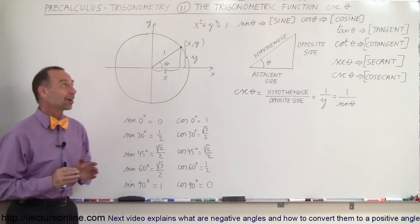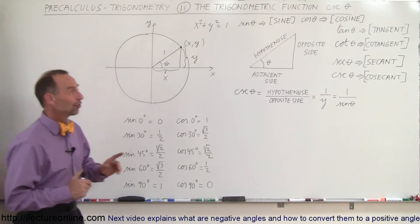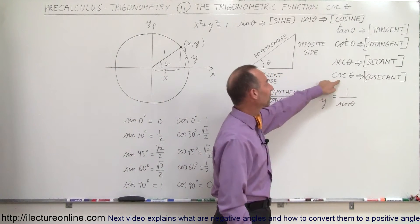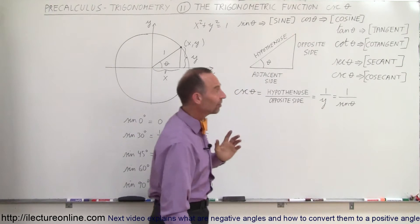Welcome to ElectronLine. Now we're going to talk about the cosecant, and notice how we say the word: it's cosecant, and we write it as CSC of the angle. So what does that mean?